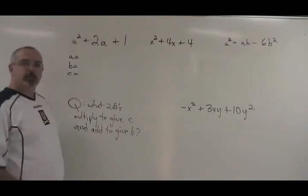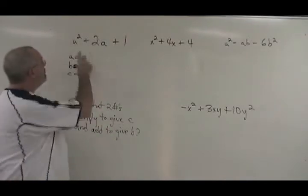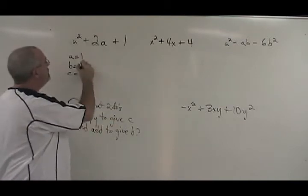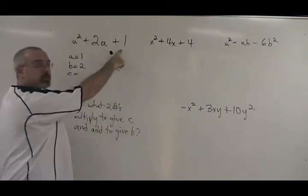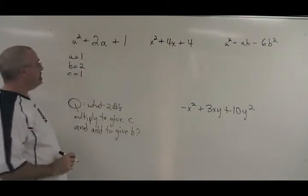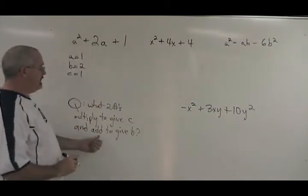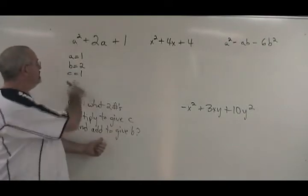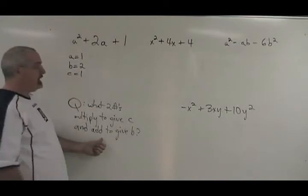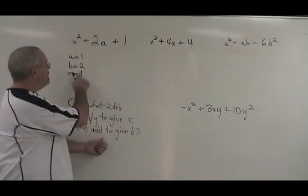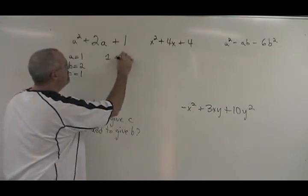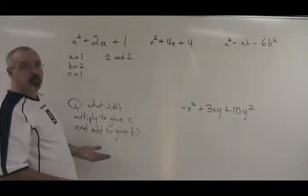We identify these as a, b, and c. The numerical coefficient of a squared is 1. The numerical coefficient of 2a is 2. The numerical coefficient of 1 is 1. Then we ask ourselves this question: What two numbers multiply to give c and add to give b? So in this case, what two numbers multiply to give 1 and add to give 2? The answer is 1 and 1. They add to give 2, they multiply to give 1.